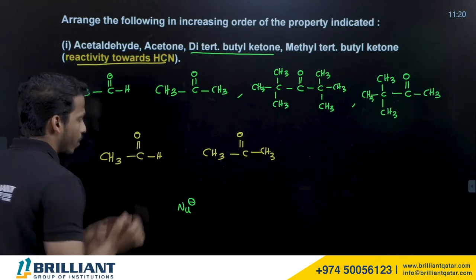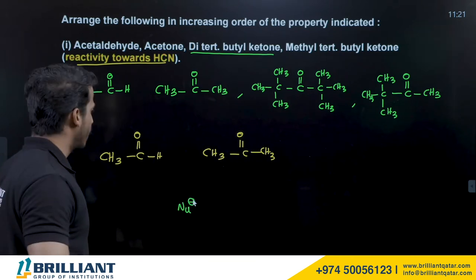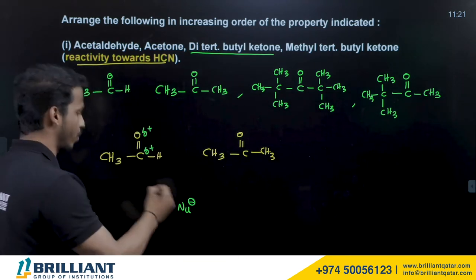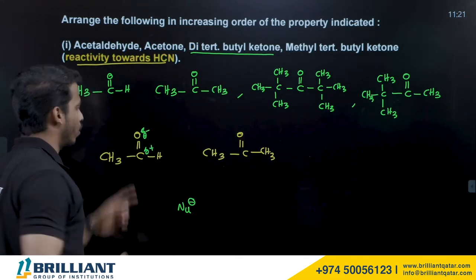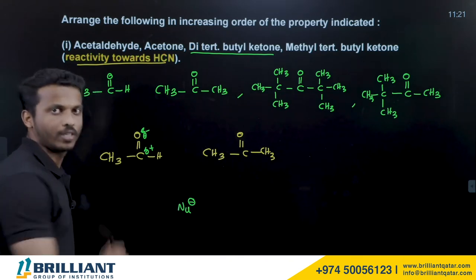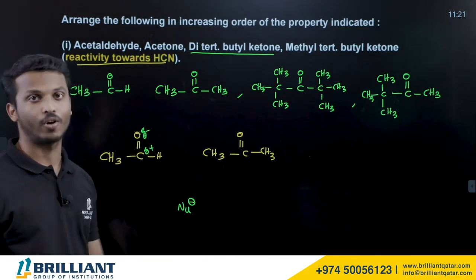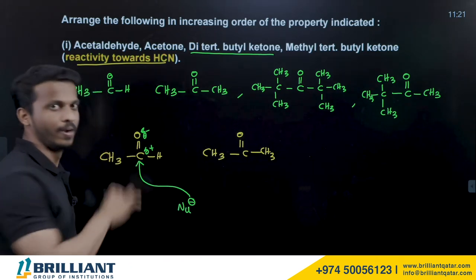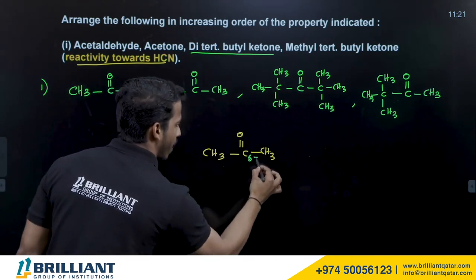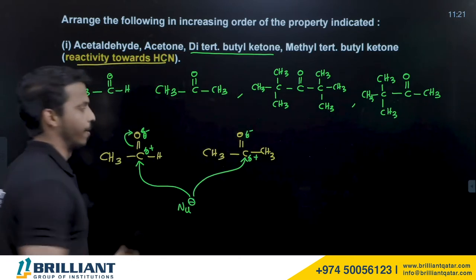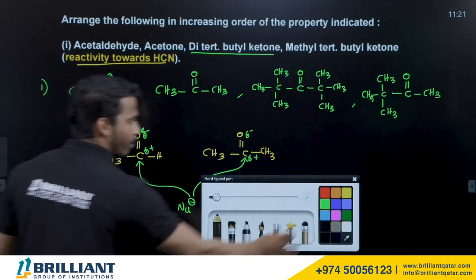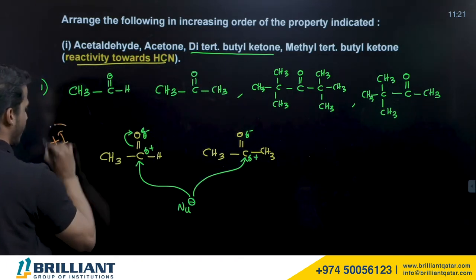In the carbonyl group, carbon carries partial positive charge (δ+) and oxygen carries partial negative charge (δ−) because oxygen is more electronegative. The nucleophile attacks the carbonyl carbon. Alkyl groups are electron-donating; they decrease the positive charge on carbon, reducing reactivity towards nucleophilic addition.